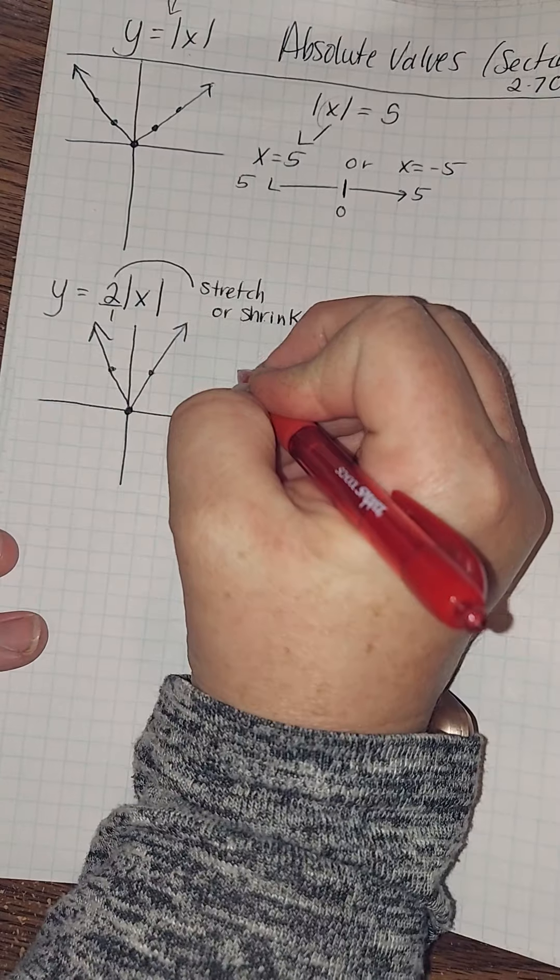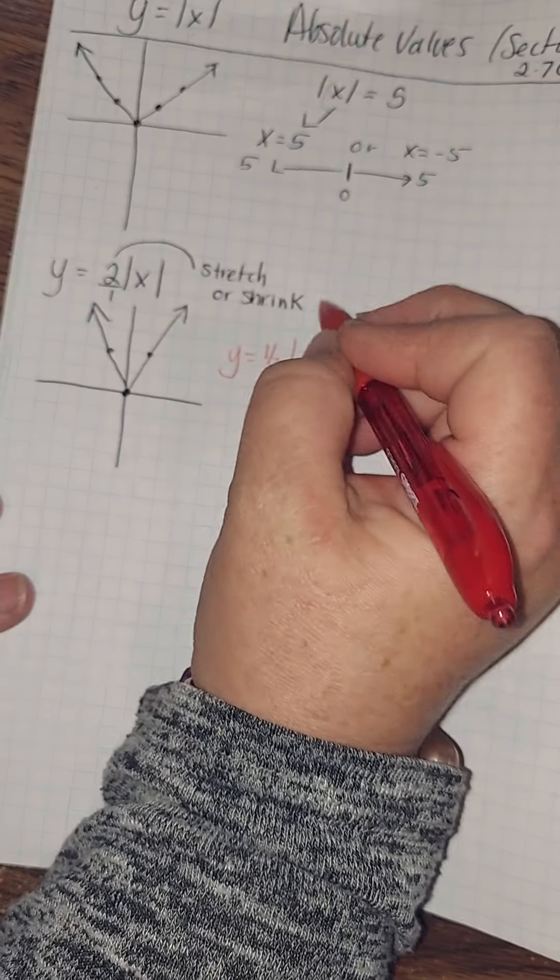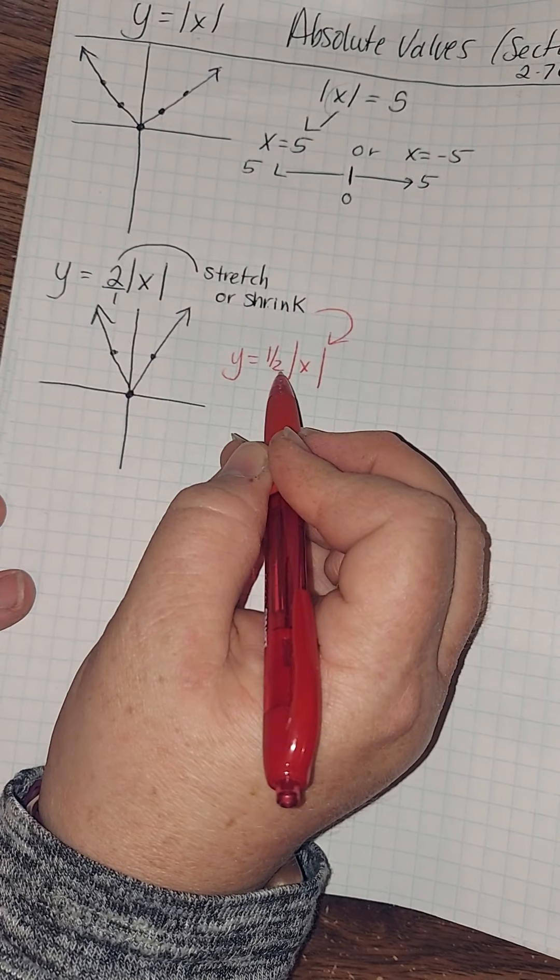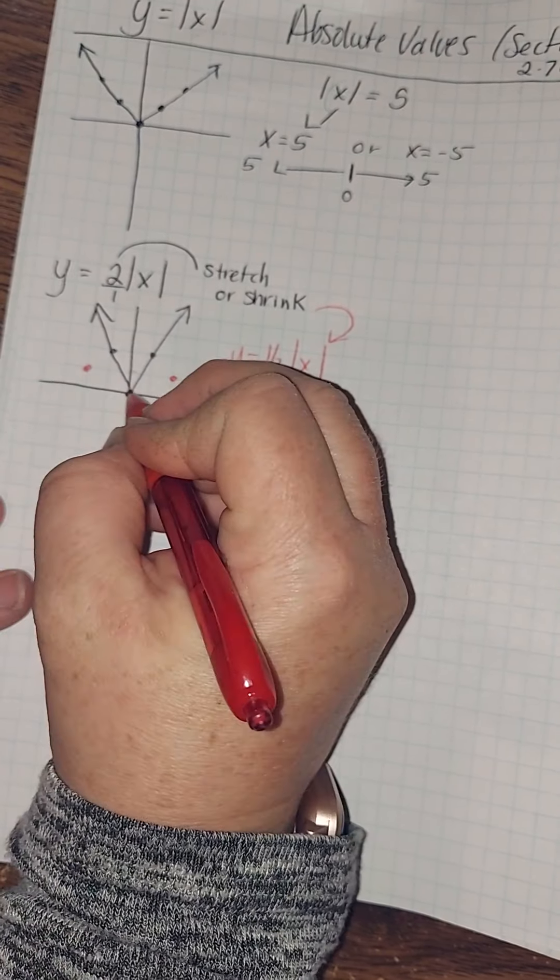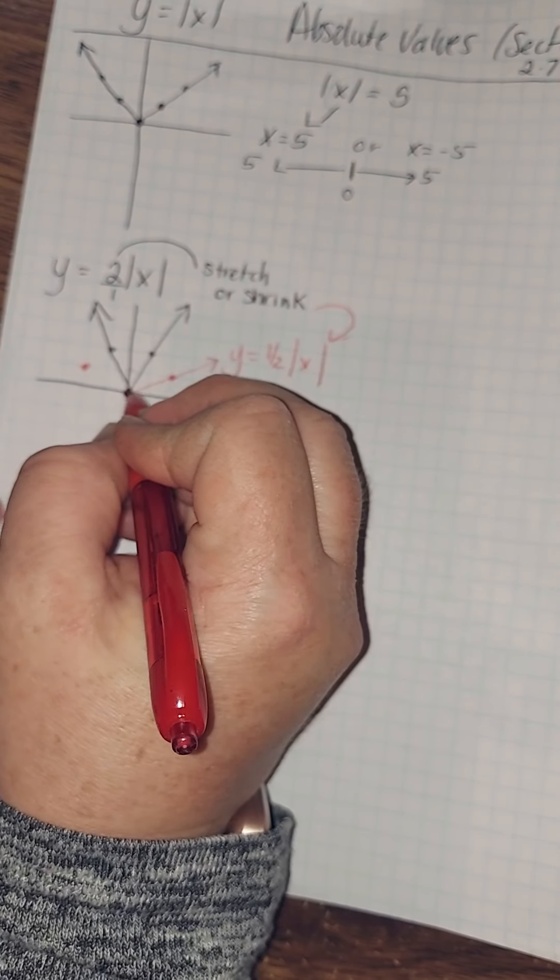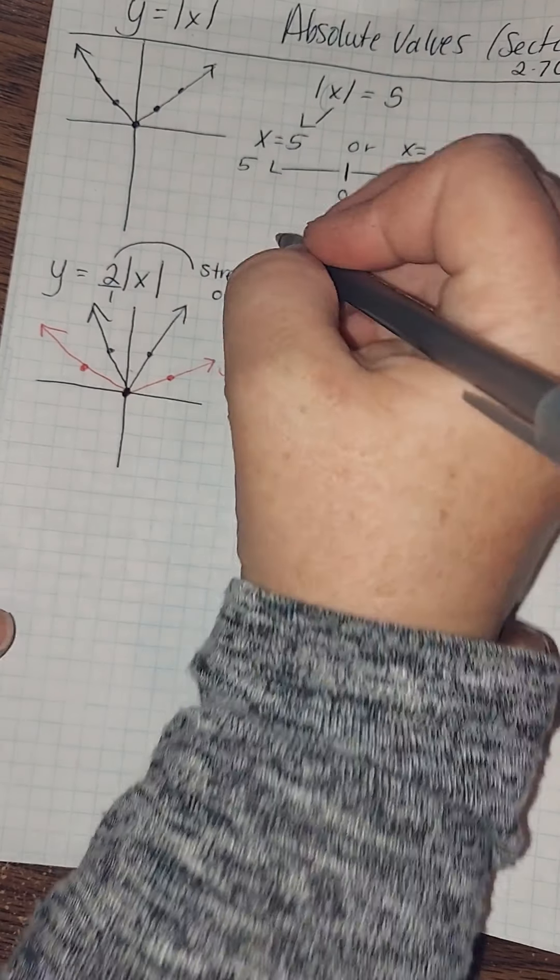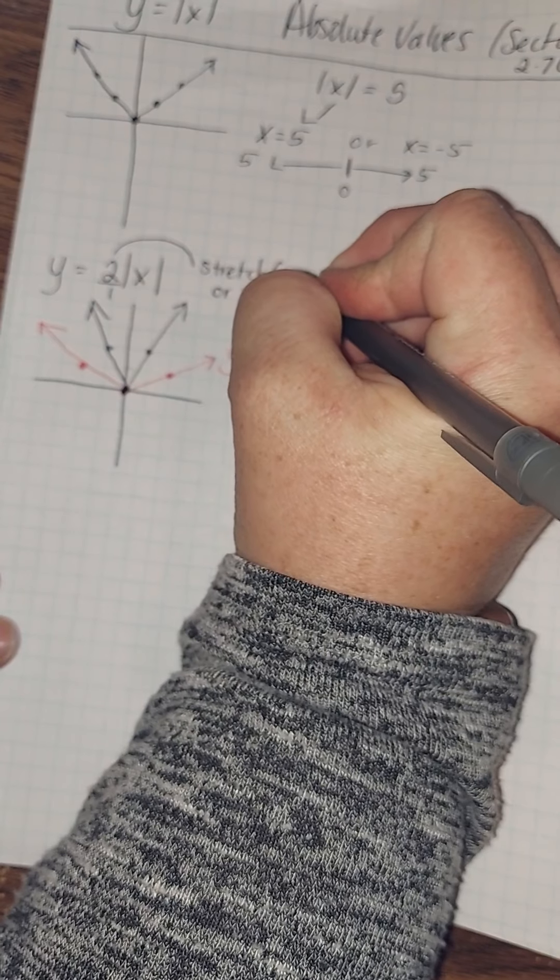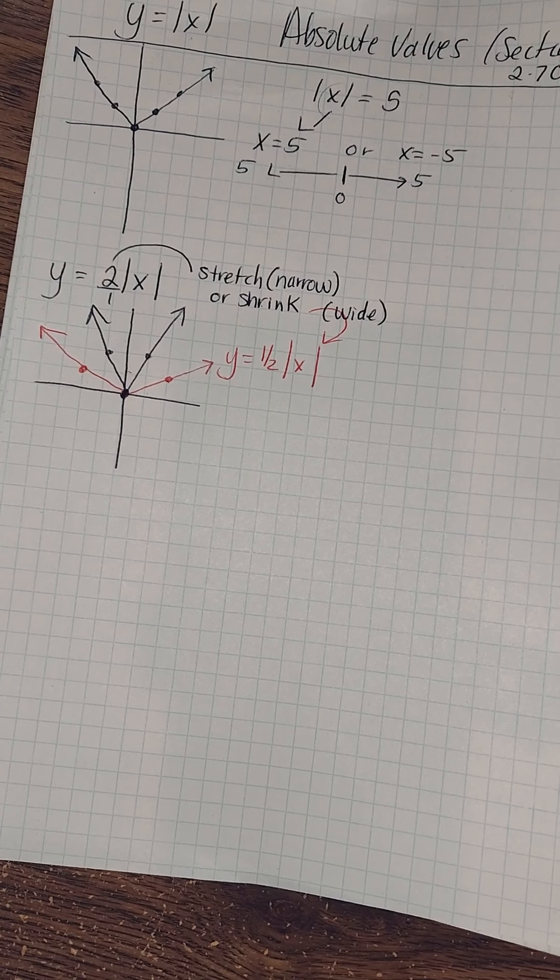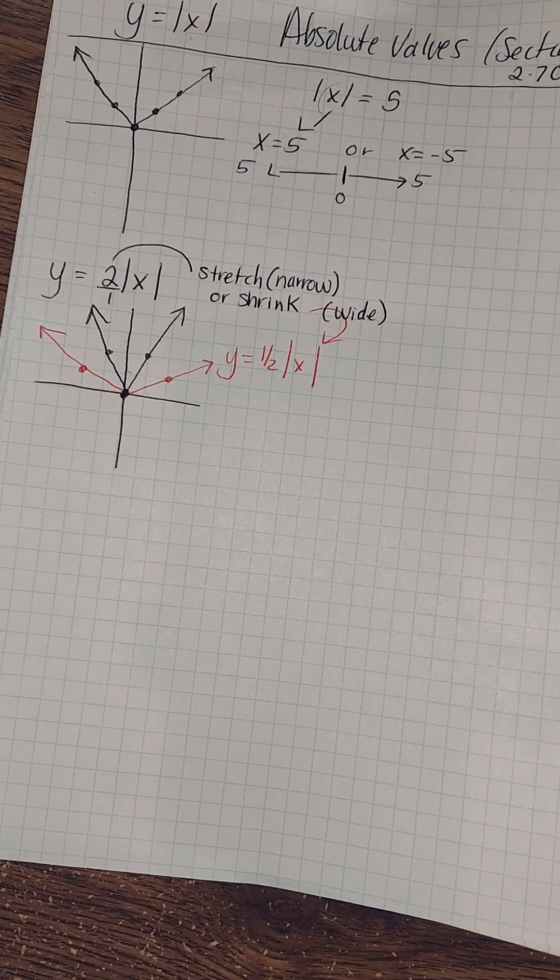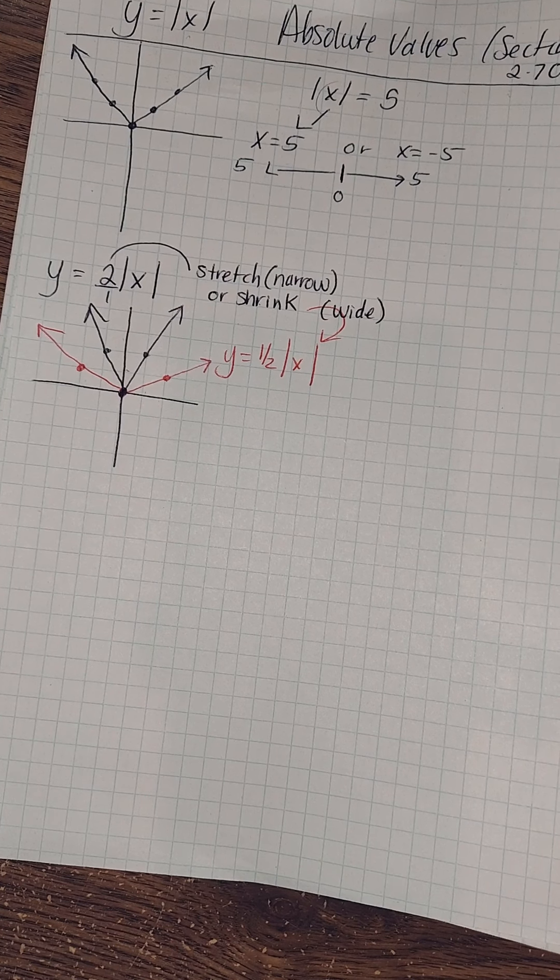I'm going to stay on the same graph, but now I'm going to show you a shrink. So I'm going to do 1 half. So this is the shrink. Instead of a slope of 1, I go up 1 over 2, up 1 over 2. What I do to one side, I do to the other. So see how it's much wider, isn't it? So we could also say instead of stretch or shrink, stretch would be narrow and shrink would be wide. I think those are the terms they use instead of stretch and shrink. So you're changing really the slope of the line, aren't we?